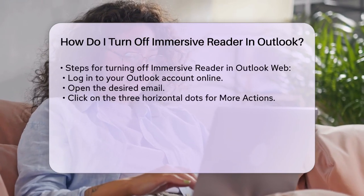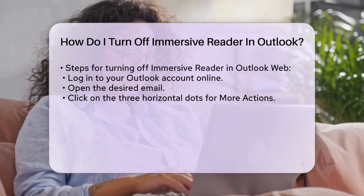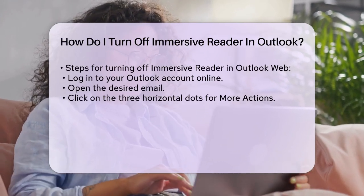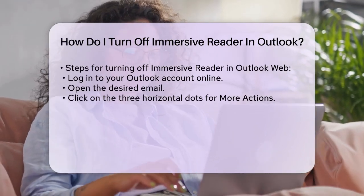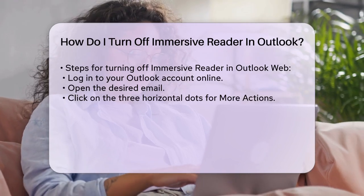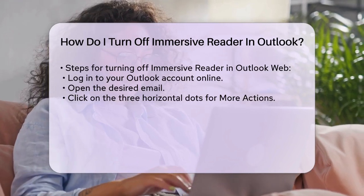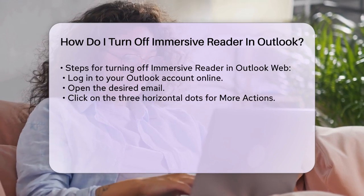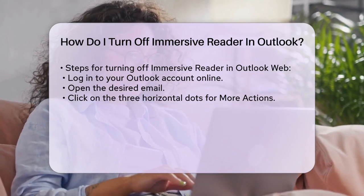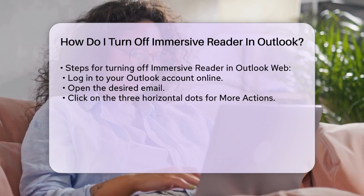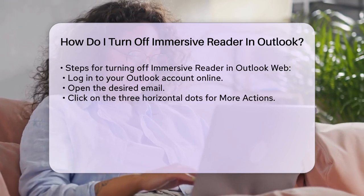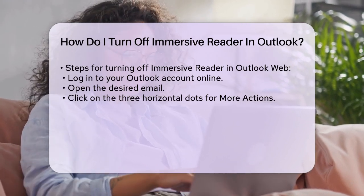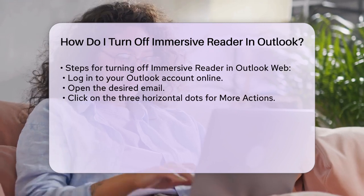For Outlook Web: if you're using Outlook on the web, the process is similar but slightly different. Log in to your Outlook account on the web and open the email you want to read. Click on the three horizontal dots at the right side of the email to show more actions. Select Show in Immersive Reader from the list, but since you want to turn it off, simply click the back arrow or press the Esc key on your keyboard.